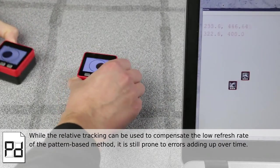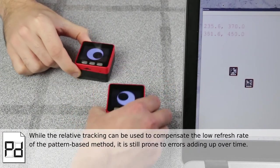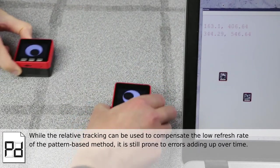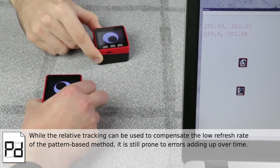While the relative tracking can be used to compensate the low refresh rate of the pattern based method, it is still prone to errors adding up over time.